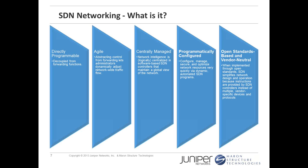When implemented through open standards, SDN simplifies network design and operation because instructions are provided by SDN controllers instead of multiple vendor-specific devices and protocols. Think of that — you can have multiple platforms from multiple vendors and not have to worry whether they're going to play nice. This potentially means cost savings because you're not having to buy specific platforms or specific vendors. If a vendor is not available in a certain region, you're controlling that type of configuration from elsewhere. You've decoupled that control plane, controlling routing behavior away from the box.